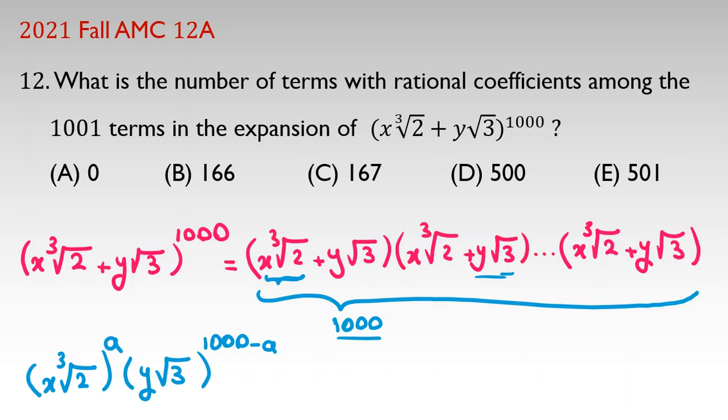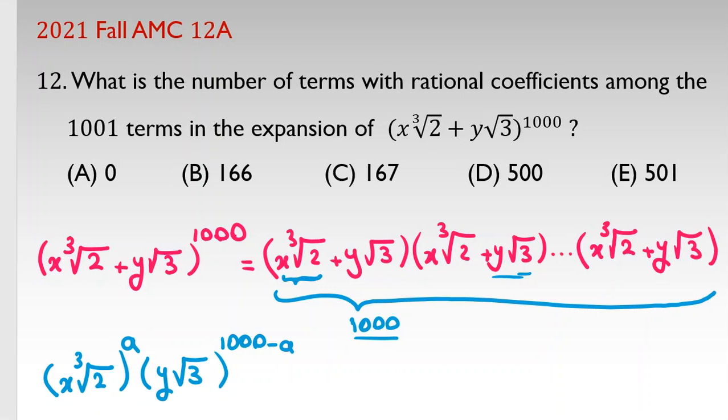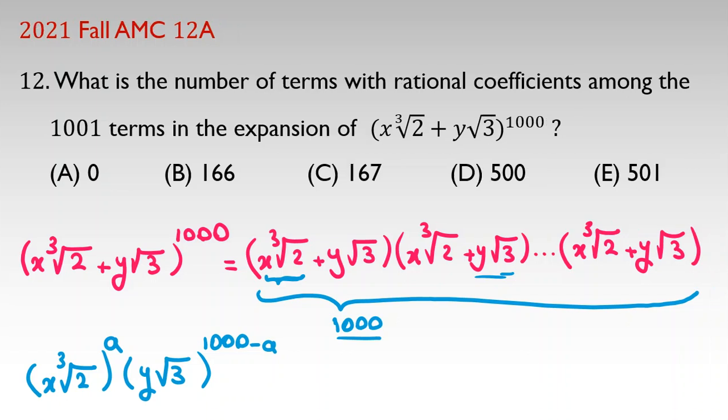If we want to simplify this term, we know square root is to the power of, for example, let me show you. If you have a square root of w, it is w to the power of 1 over 2. If you have cube root of w, it will be w to the power of 1 over 3.